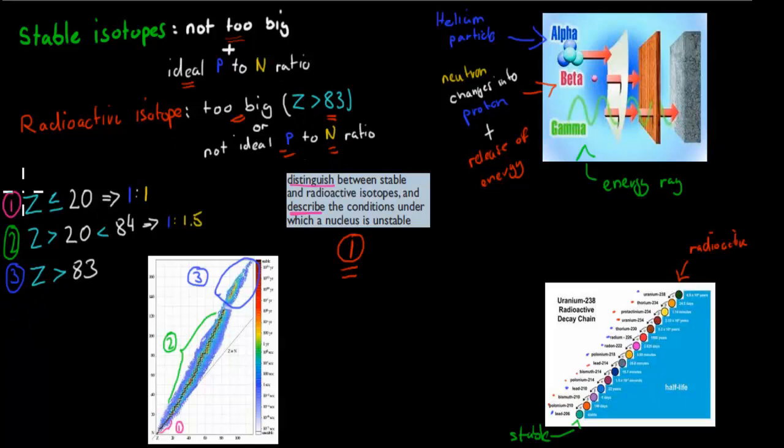These are the three examples of a radioactive isotope. Either it has an atomic number, so this is the atomic number, of equal to or less than 20, its ideal ratio is one proton for every one neutron. If it has an atomic number greater than 20, so 21 to 83, then it has an ideal ratio of one proton to every 1.5 neutrons. If it has an atomic number greater than 83, it's always a radioisotope, it's always radioactive.